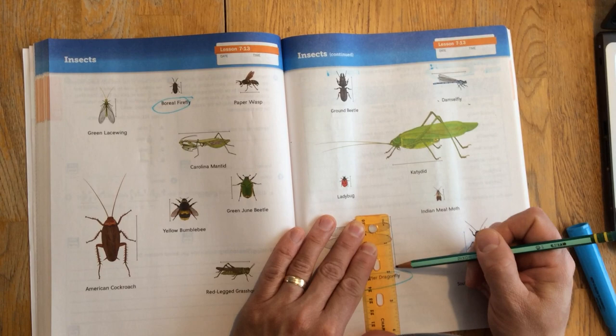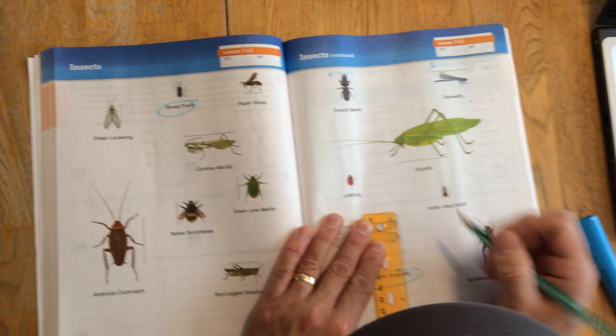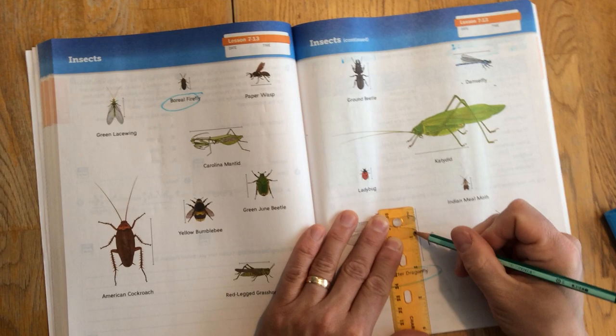Now this is one and three-fourths of an inch, also known as one and six-eighths. So I'm just going to write that here in the margin. One and six-eighths of an inch. So it's more than one inch but less than two.